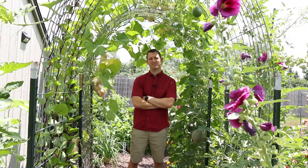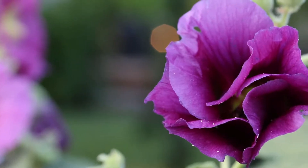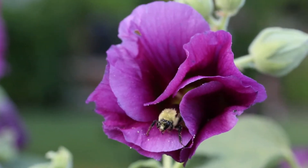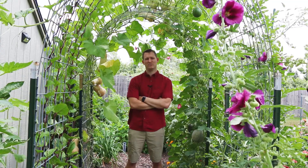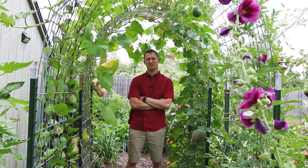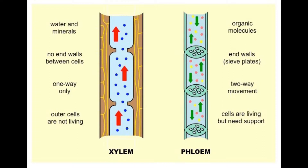In order to see why that advice wasn't useful, we're going to have to talk a little bit about plant biology. Plants really have two main vascular types: the xylem and the phloem. The phloem is where they move sugar after photosynthesis, and that doesn't really come into play much when talking about blossom end rot. But the xylem is really what comes into play — it's how the plant carries water and minerals to the different portions of the plant.